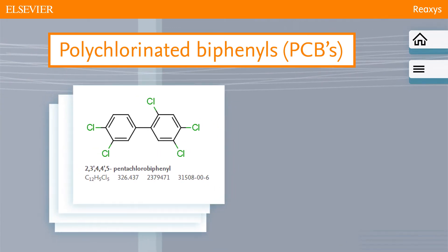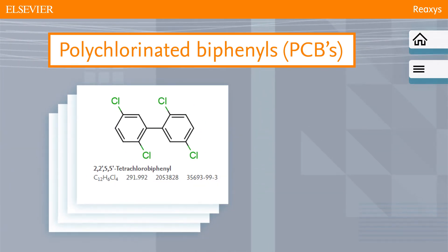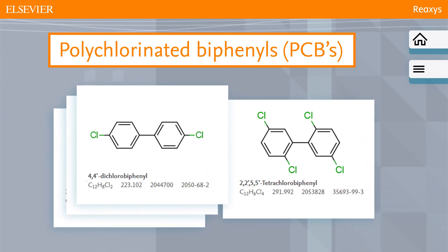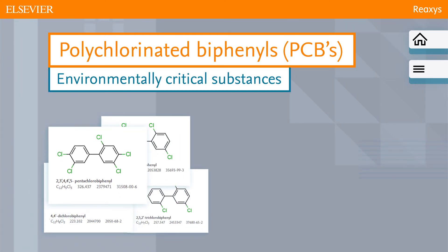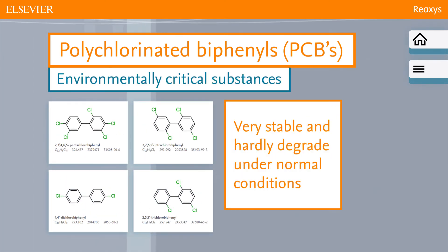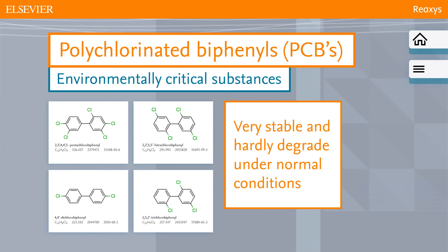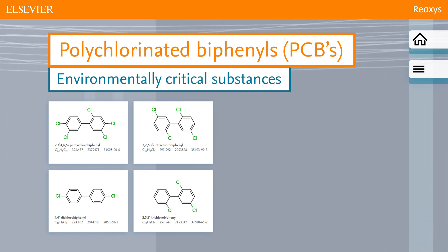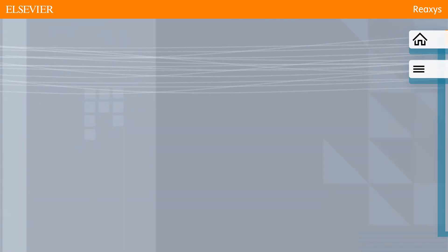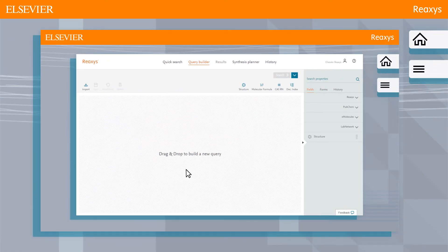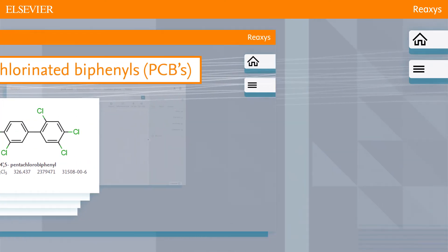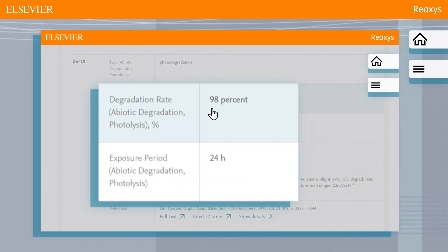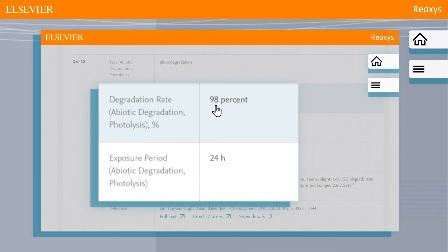As an example, we are interested in finding out more about polychlorinated biphenyls, or PCBs. They are known as environmentally critical substances because they are very stable and hardly degrade under normal conditions. In this video we will search for chlorinated biphenyls and check what has been reported on their degradation by photolysis.